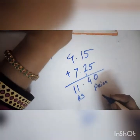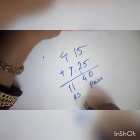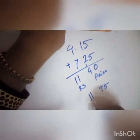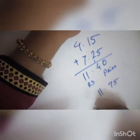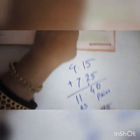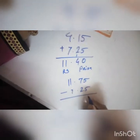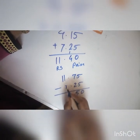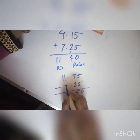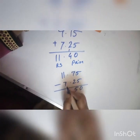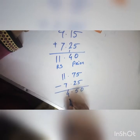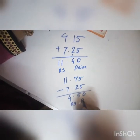Again, we will solve this. We have 11 rupees and 75 paisa, and we have to subtract 7 rupees and 25 paisa. 75 minus 25 is 50. Then 11 minus 7 is 4. So we get 4 rupees and 50 paisa.